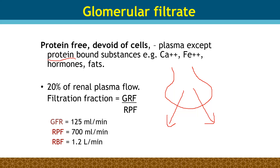Any plasma proteins, or substances bound with proteins, cannot cross. For example, calcium exists as free calcium and protein-bound calcium. Free calcium will be filtered; protein-bound calcium cannot cross. Similarly, iron carried by transferrin cannot cross the glomerular membrane because it is bound with a large protein. Protein hormones, large peptides, and fats also cannot cross the glomerular membrane.